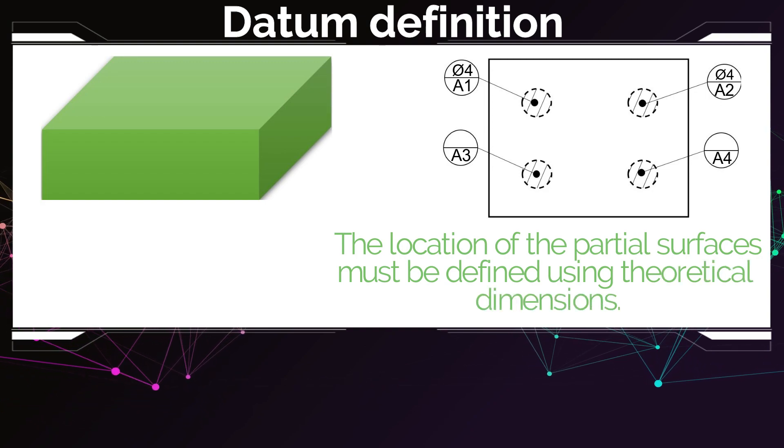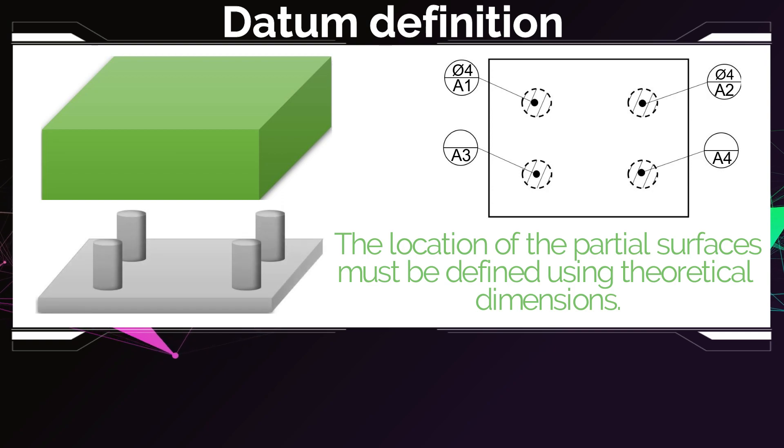So in that case you can imagine that during the measurement, this part is going to be pushed against a gauge that has these four cylinders with a diameter of four, and your part will be resting on top of them exactly on the points where you specified. And using this way you are sure that now your part is fixed only on the functional surface, only on the surface that matters to you later on the function.